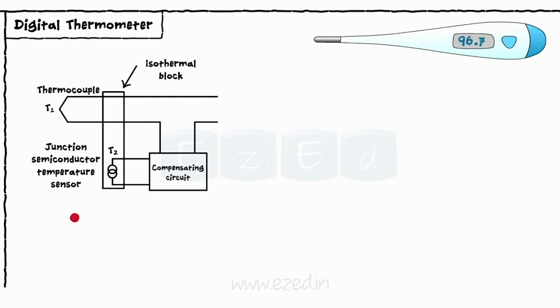The compensating circuit produces a voltage which is added to thermocouple output and is proportional to temperature T1. This compensated voltage is in millivolts, so it is applied to an amplifier which amplifies it to a desired level.